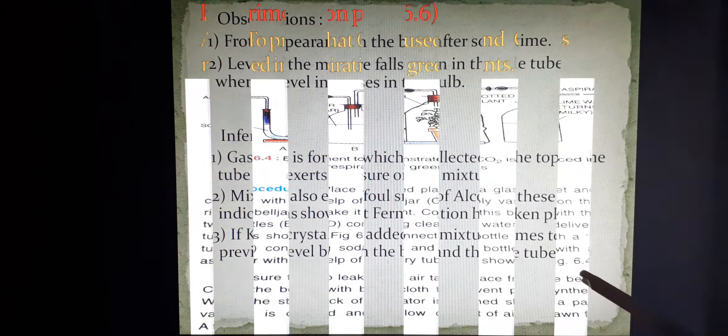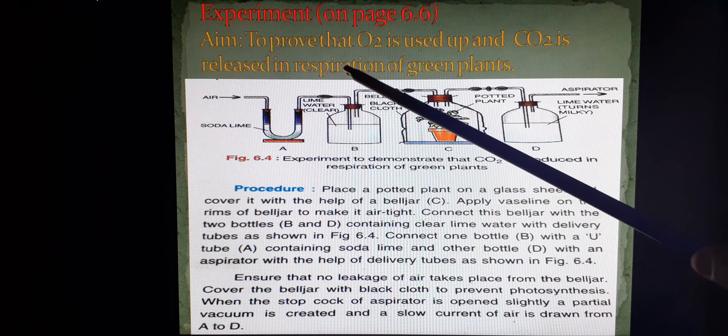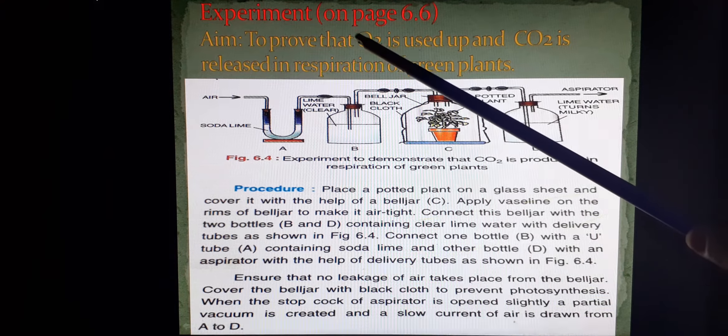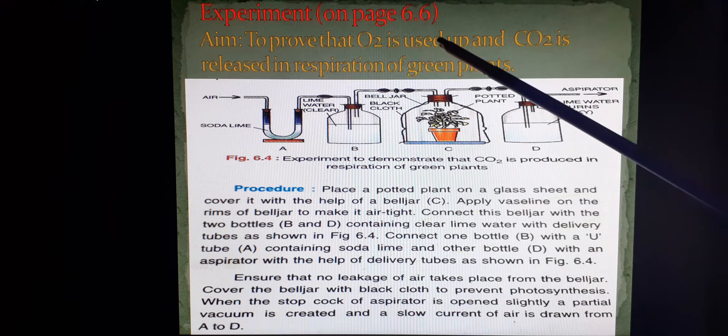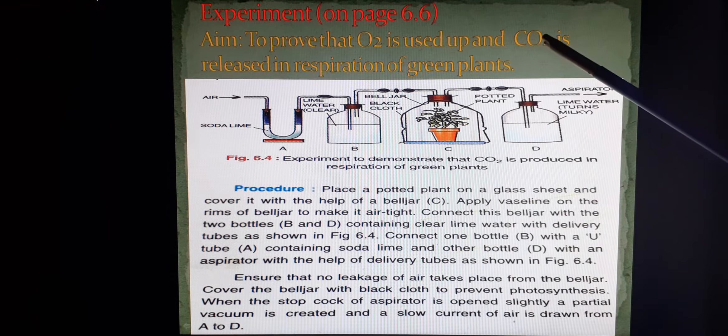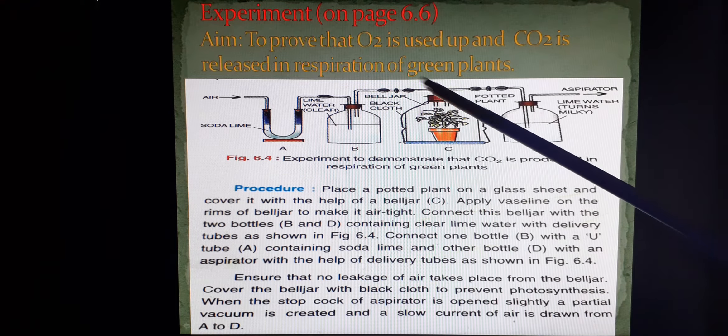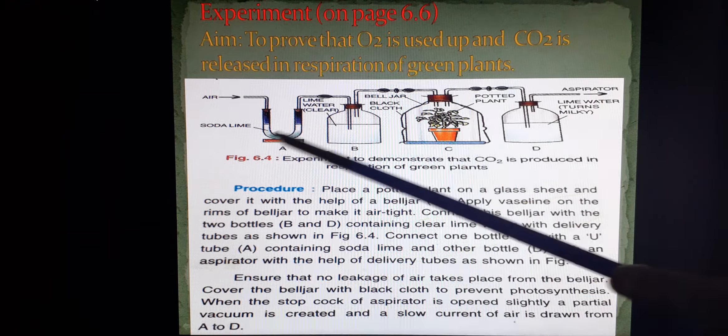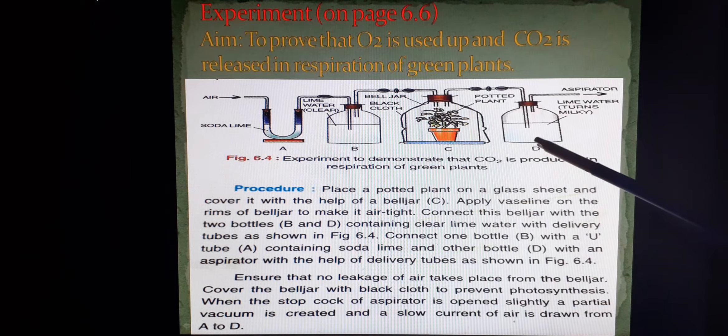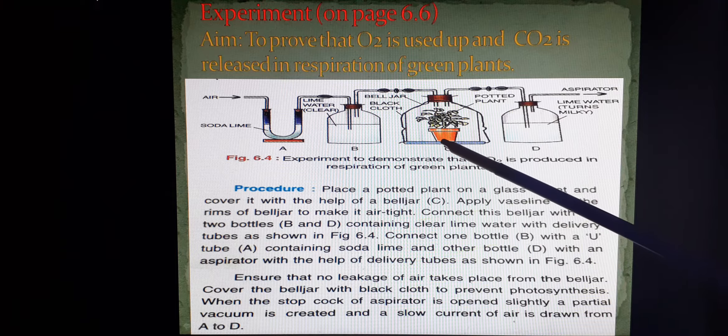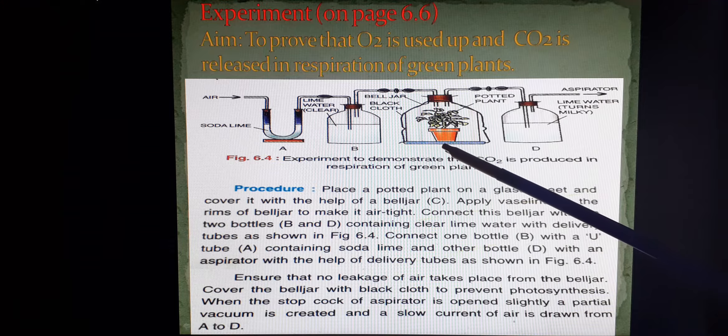To continue, we come to the third experiment in which we are trying to prove two things: oxygen is used up during respiration and carbon dioxide is released. In this setup, though it seems to be a complicated one, if we start to understand, we have taken in C a glass sheet above which we have placed a potted plant and a bell jar has been inverted.